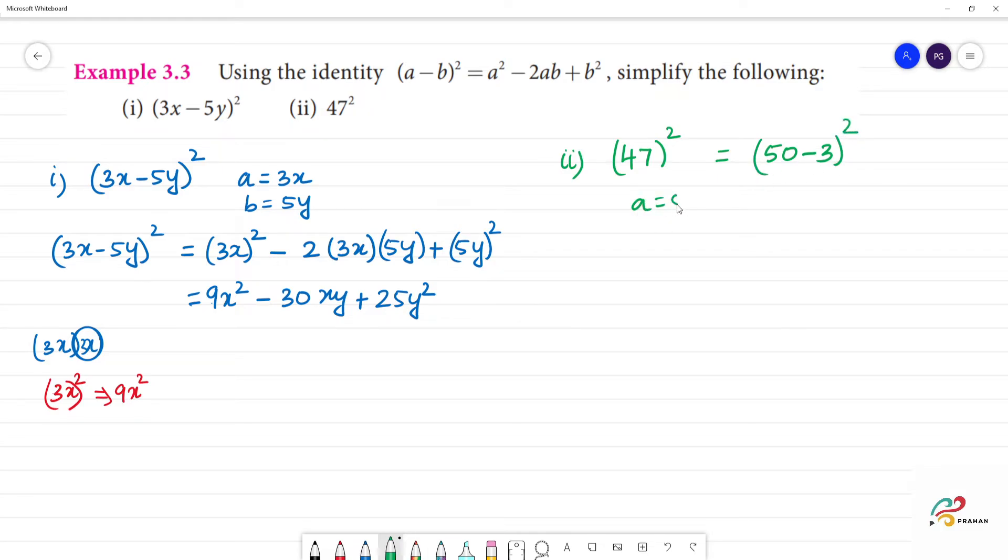a = 50, b = 3. So we expand: (50 - 3)² = 50² - 2(50)(3) + 3².